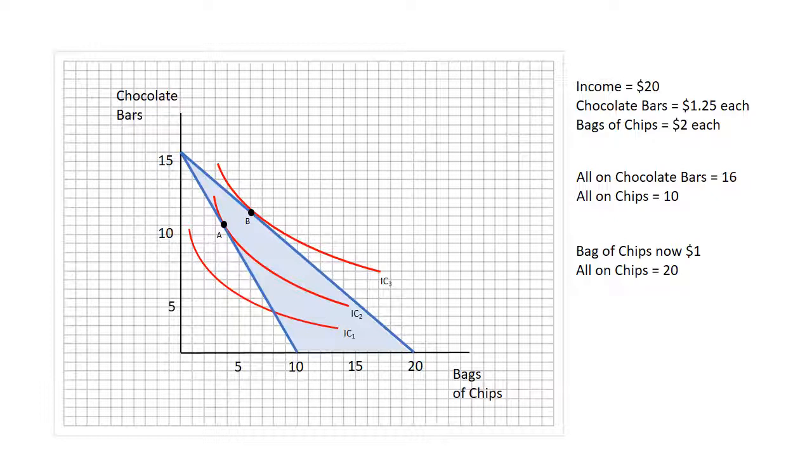One way that we can break down this change between A and B that takes account of this aspect of the lower price of chips that makes the consumer richer is to ask what increase in income would the consumer have to have to make them just as well off as the price change of the bag of chips.